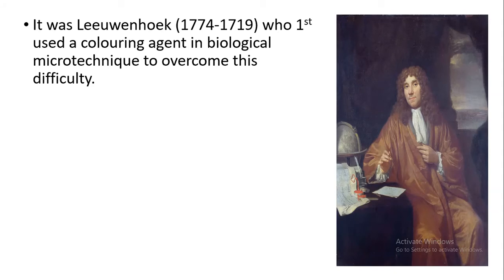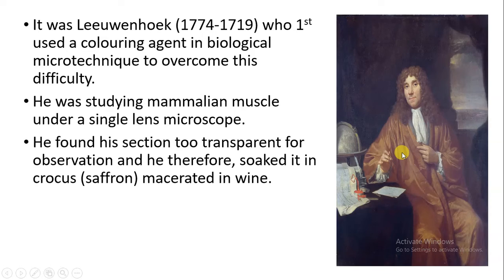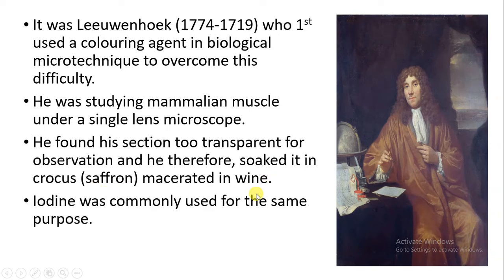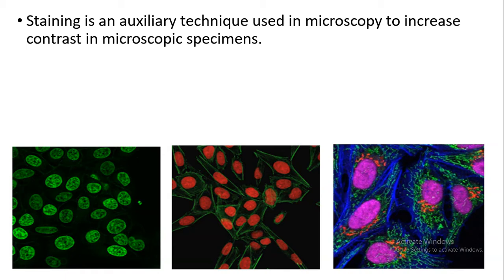Here we will talk about the scientist Leeuwenhoek, who used the first colouring agent in biological micro-technique to overcome his difficulties. He was studying a mammalian muscle cell under a single-lens microscope, but because the cell was transparent, he wasn't able to observe it — the section was very transparent. That is why he soaked the cell in crocus saffron macerated in wine, and also used iodine as another stain, which enabled him to stain and observe the cell. So staining is a very helpful auxiliary technique used in microscopy.